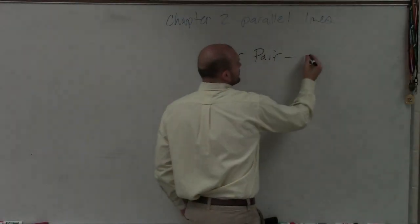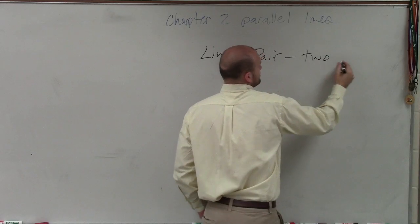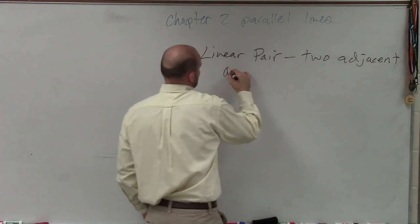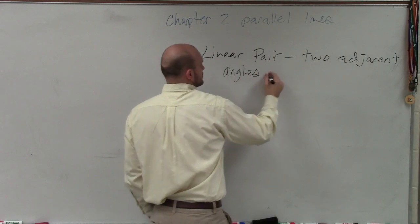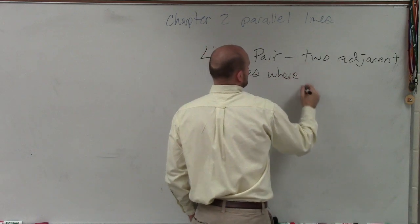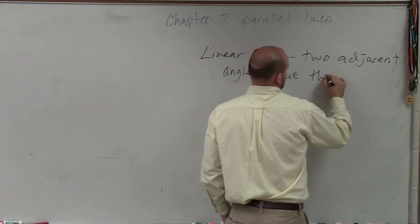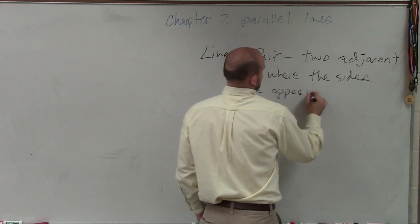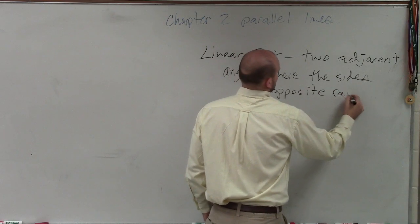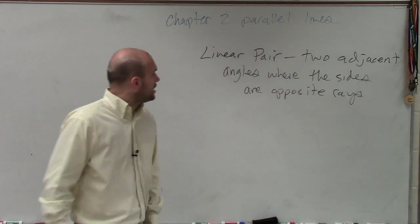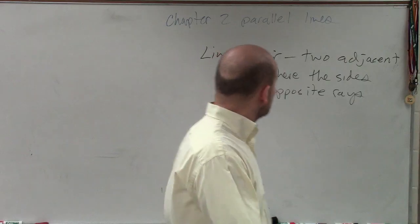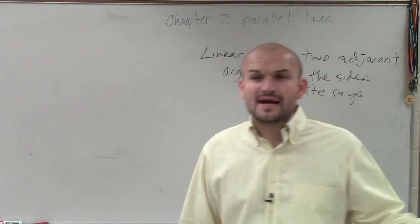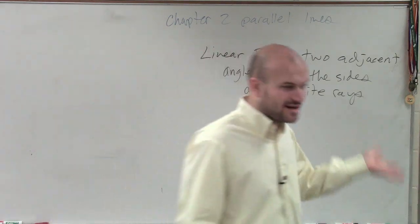A linear pair is two adjacent angles where the sides are opposite rays. So therefore, to be able to create adjacent angles, we need to be able to create opposite rays.